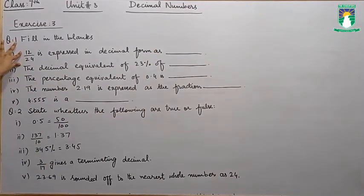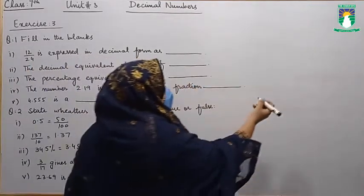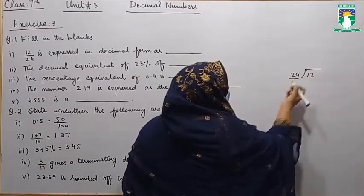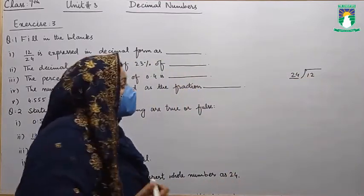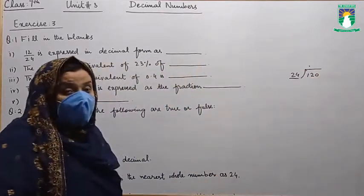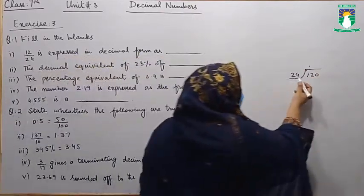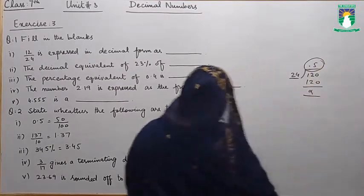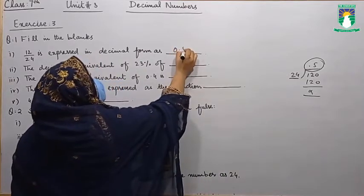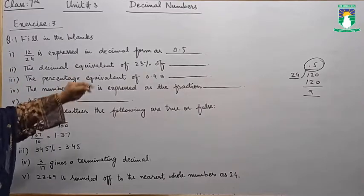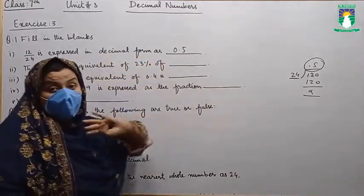How can we write 12 over 24 in the decimal number system? First of all, we divide 12 by 24. Because 24 is the greater number, 24 fives are 120, so the answer is 0.5. We can write 12 over 24 in decimal form as 0.5.